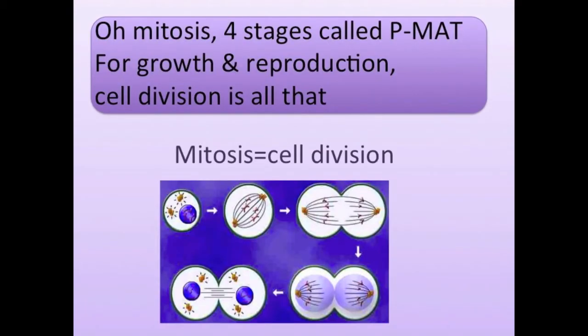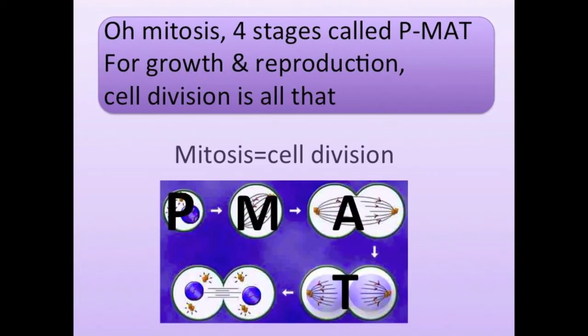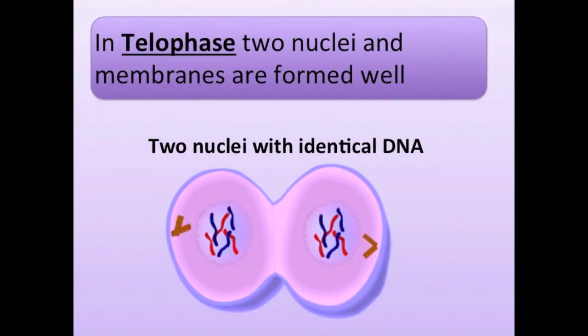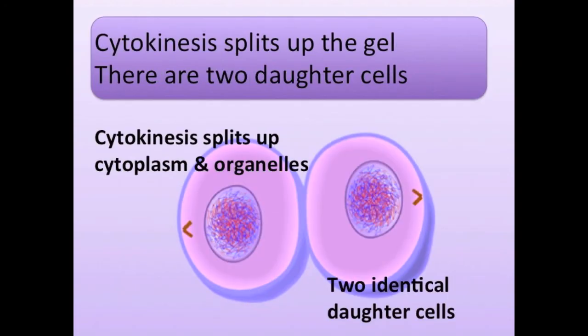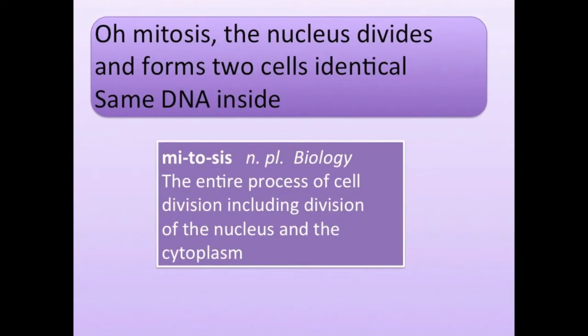Mitosis has four stages, call PMAT. For growth and reproduction, cell division is all that. In telophase, two nuclei and membranes are formed well. Cytokinesis splits up the cell, there are two daughter cells.